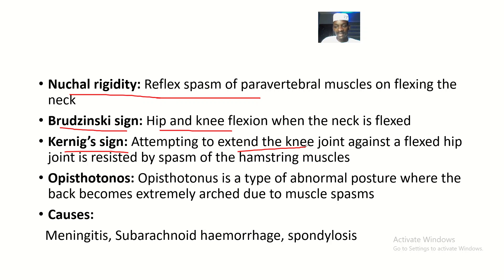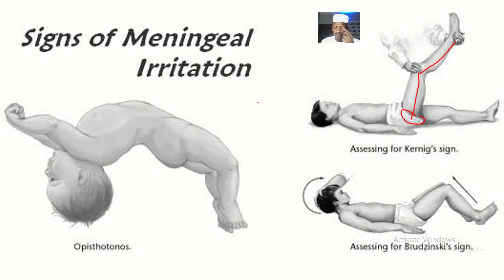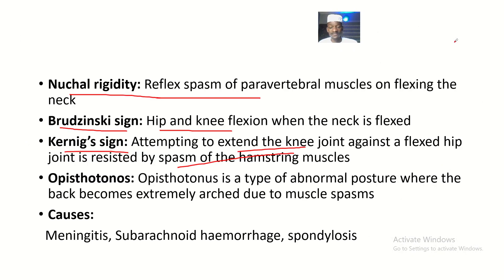Kernig's sign is basically attempting to extend the knee joint against a flexed hip joint, and if this is resisted by spasm of the hamstring muscles, the sign is positive. You flex the person's hip joint, then try to raise the leg to about 90 degrees. If Kernig's sign is positive, there will be resistance to extension of the leg from the hamstring muscles.